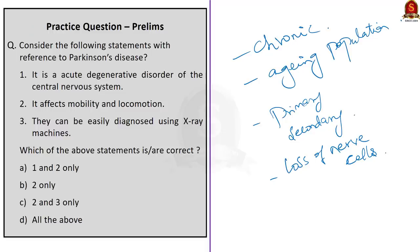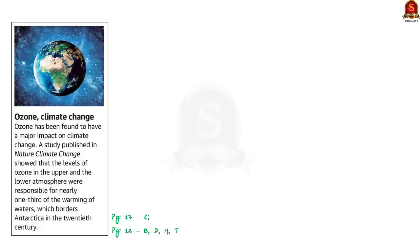Now we will move on to the next news article, which talks about the major impact of ozone on climate change. The level of ozone in the upper and the lower atmosphere were responsible for nearly one third of the warming of waters bordering Antarctica. This study was published in Nature Climate Change. In this context, let us discuss about ozone at the ground level as well as in the upper atmosphere, which will be very useful for your prelims.